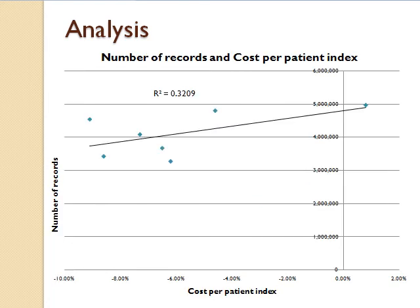This graph shows the relationship between the number of records and the cost per patient index. On the x-axis is the cost per patient index, while on the y-axis is the number of records. The r-squared value is 0.32, which indicates little to no correlation between these two variables.